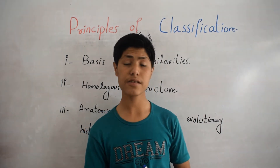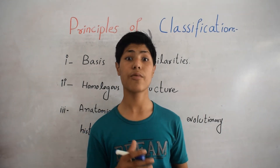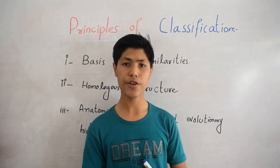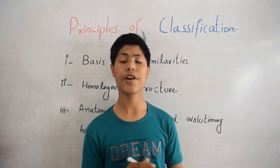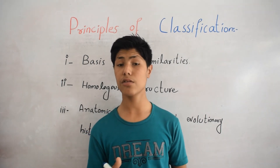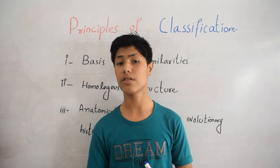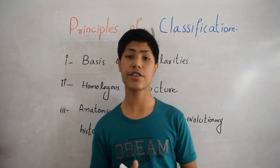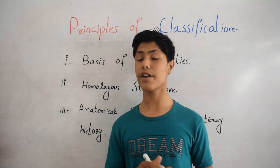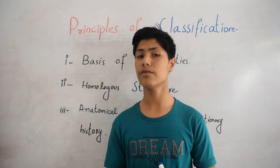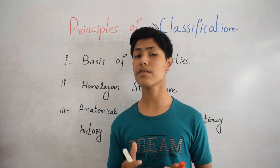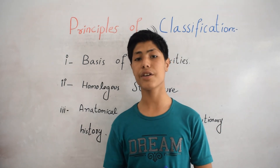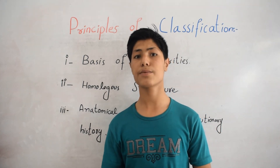Evolutionary history means where they originated from — whether they are eukaryote or prokaryote, unicellular or multicellular. On the basis of evolutionary history, we classify organisms. So students, this was all about the principles of classification. Thanks for watching.